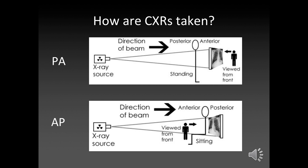AP films can be done standing, sitting, or lying down, whereas PA films have to be done standing up and the patient essentially — I don't know if any of you have seen photos of this — but they kind of hug the detector. And this moves their scapulae out of the way, so you get a clearer image of the thorax.